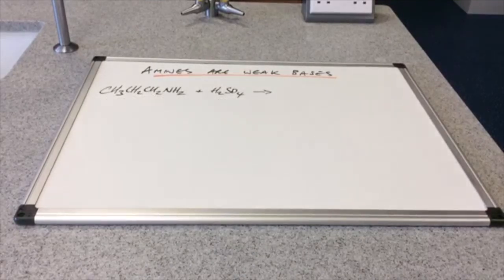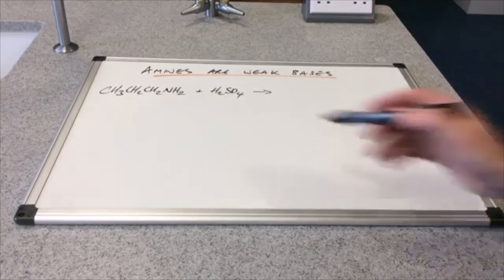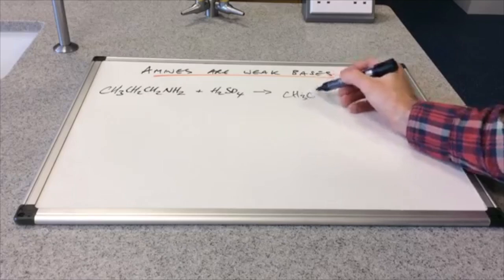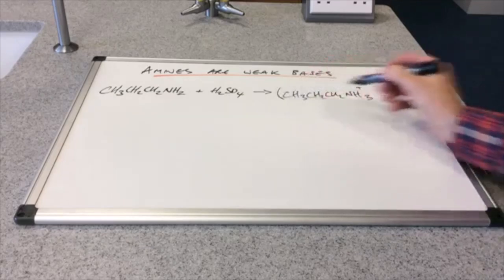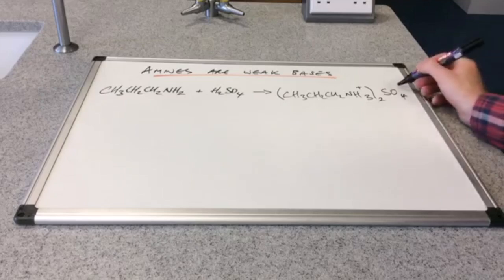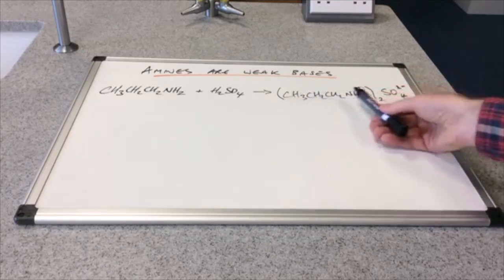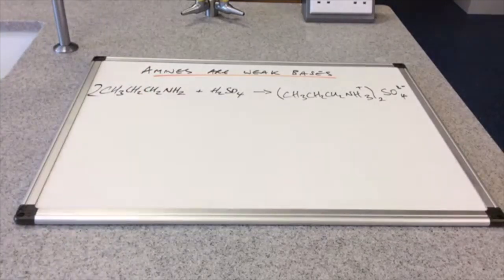We'll look at this one now. We've got propyl amine, with three carbons, and sulfuric acid. Now you'll notice we've got two H-plus ions to donate. But the amine can only accept one proton. So therefore we're going to need two of these. We're going to get the ammonium ion CH3CH2CH2NH3+. But we're going to have two of those. That will be able to bond with the sulfate ion and form the salt. It's going to be called propyl ammonium sulfate. And obviously to balance that equation, we need two moles of the amine.